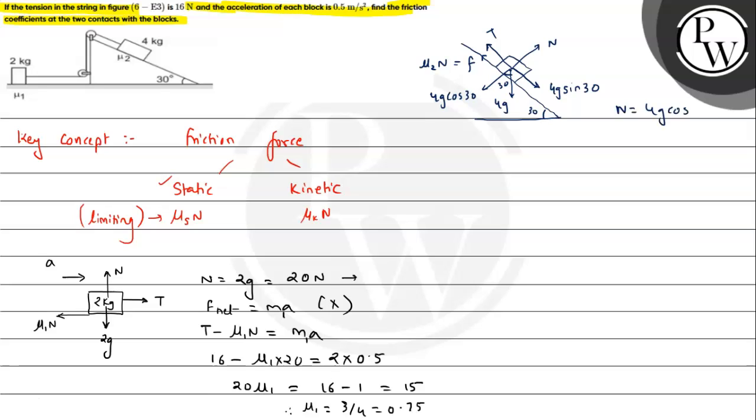Now we can write N will be equals to 4g cos 30. Now g value we can take as 10, so 40 into cos 30. Cos 30 is √3 by 2, so this is 20√3 newton. So normal reaction we can apply.